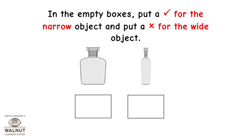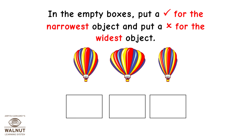In the empty boxes, put a tick mark for the narrow object and put a cross mark for the wide object. In the empty boxes, put a tick mark for the narrowest object and put a cross mark for the widest object.